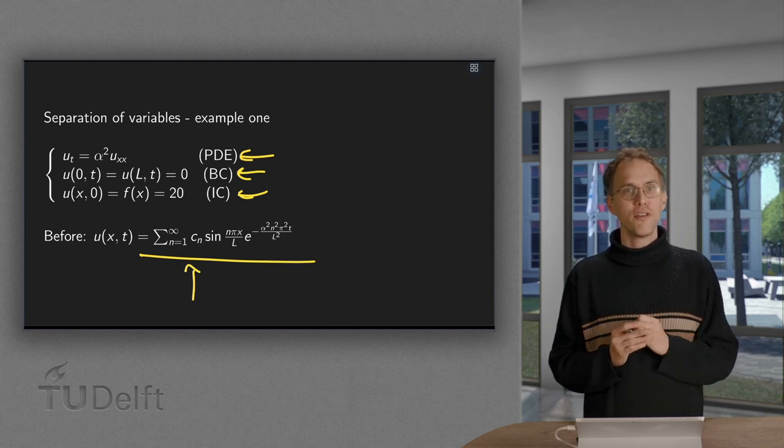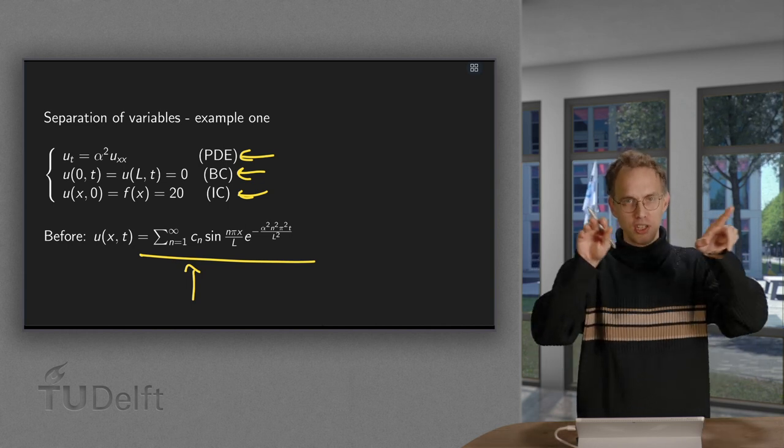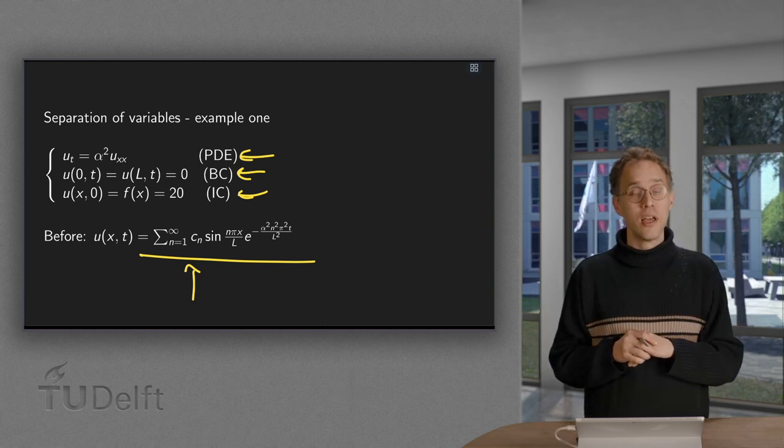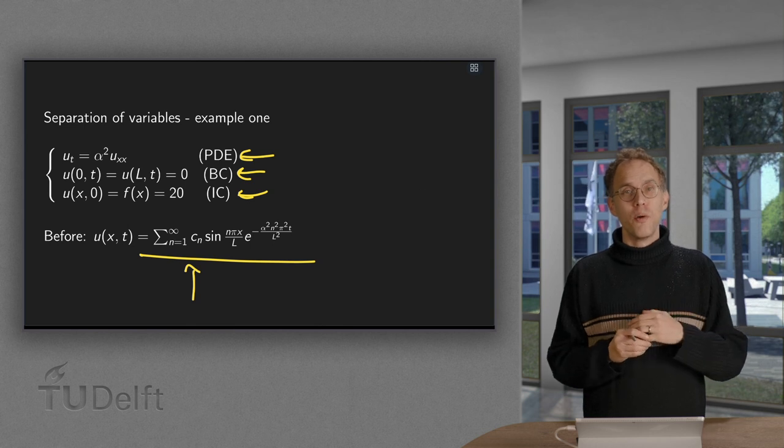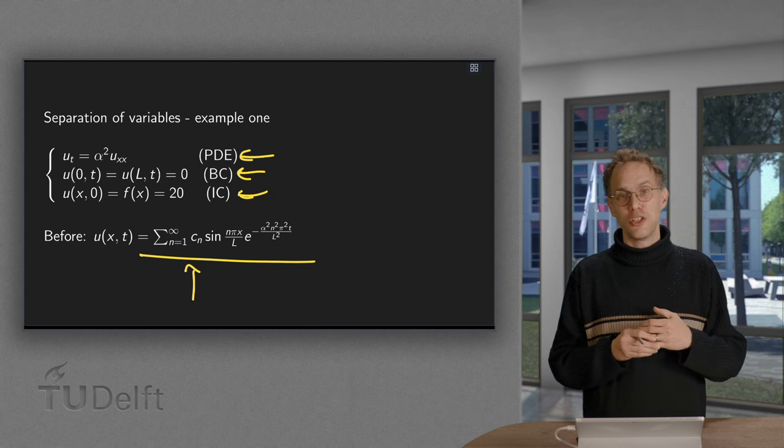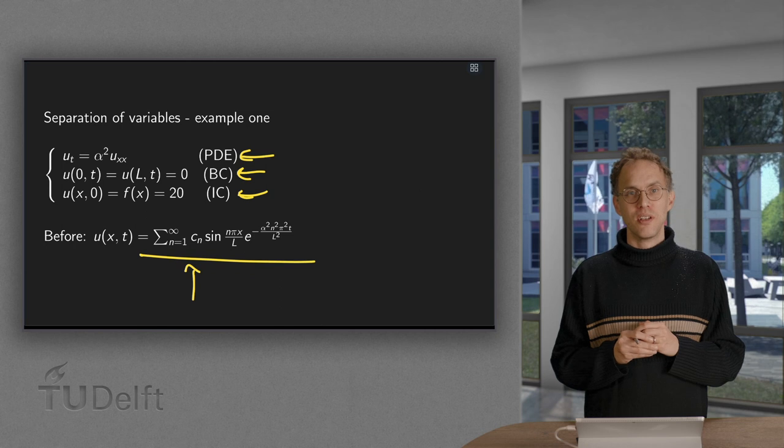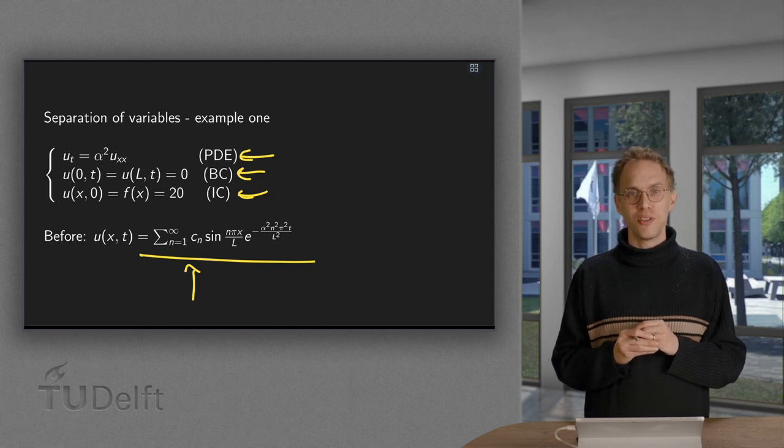Now, first use your physical intuition for this problem. So zero temperature at the boundaries, initially 20 degrees. So what will happen in the end? What will happen if t goes to infinity with the solution u of x and t? So give it a little thought and then we will see whether your intuition is correct.